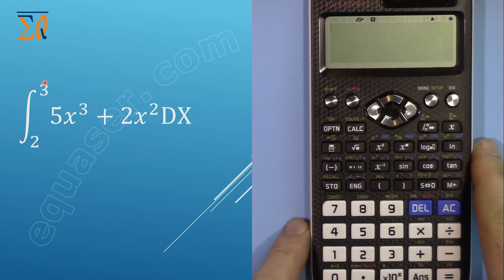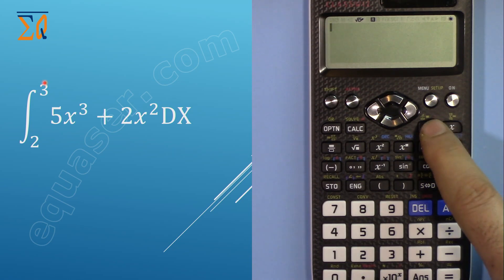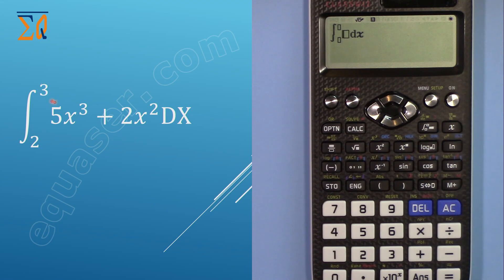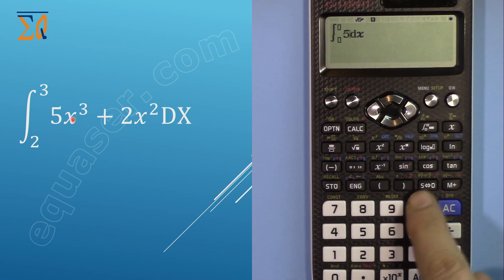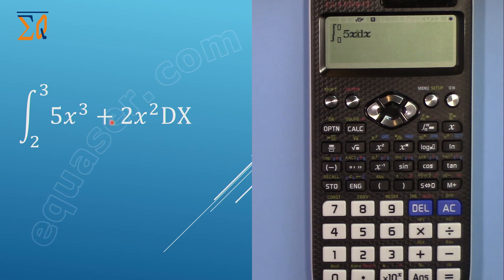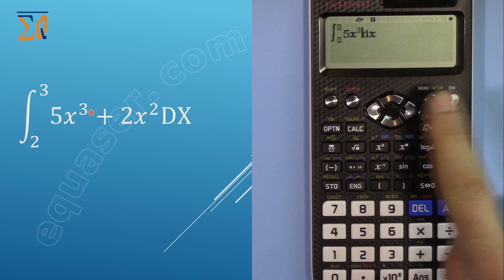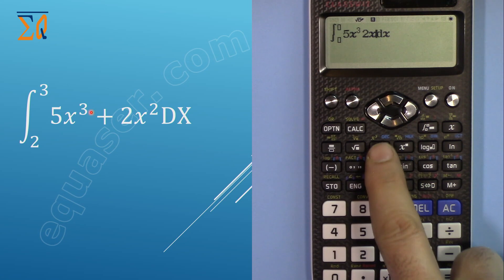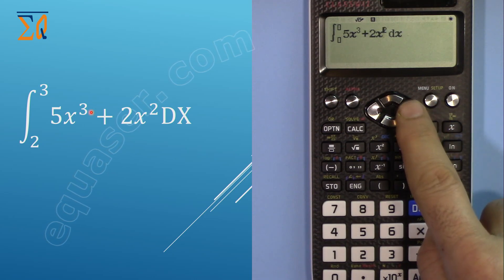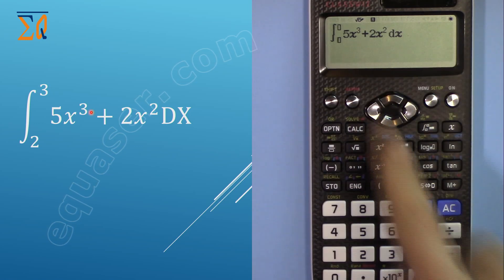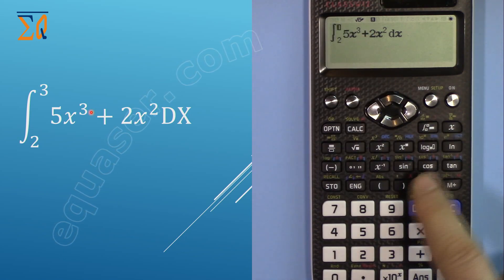Make sure your calculator is in normal calculation mode. If not, press Mode and 1. For integral, I'm pressing this button here. To enter this function 5x³, press 5, then X using this button for easy access, then to the power 3. Press 3, then move right with the arrow. Plus 2 and then X again. For the square we have a button directly. When you reach the end, move right and it will go to the bound.